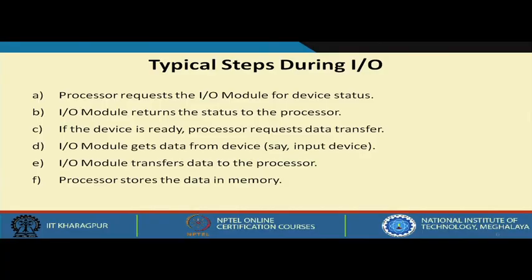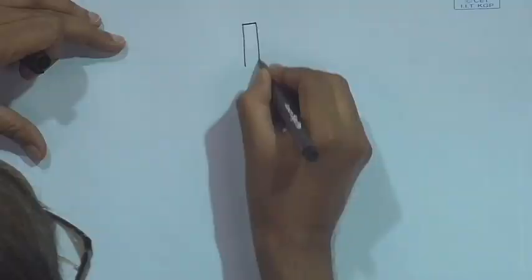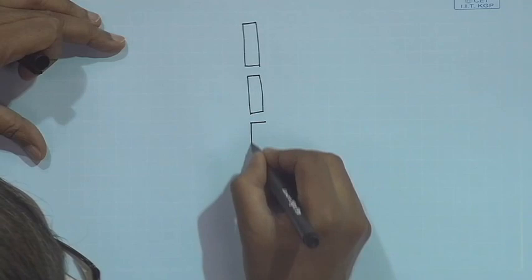I/O devices are typically interfaced through input or output ports. An output port is essentially a parallel-in parallel-out register which is enabled when a particular output device address is given. If we have several I/O devices — say all output devices — we will have several I/O ports. On one side the I/O devices are connected, and one port at a time is selected using an address decoder, similar to how address decoders are used for selecting memory modules.